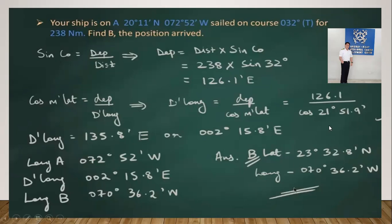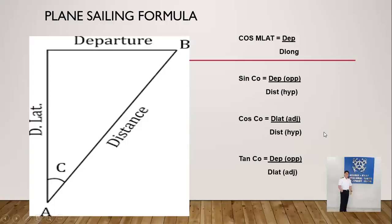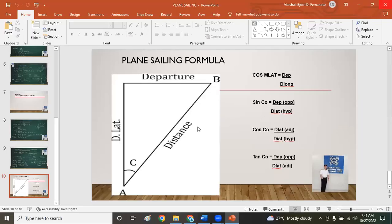That is how to solve plane sailing for finding the position of arrival. Remember, there are two types: finding course and distance, and finding the position of arrival. Plane sailing is used for distances of less than 600 nautical miles. Please screenshot the formula and diagram, and derive from whatever is given.